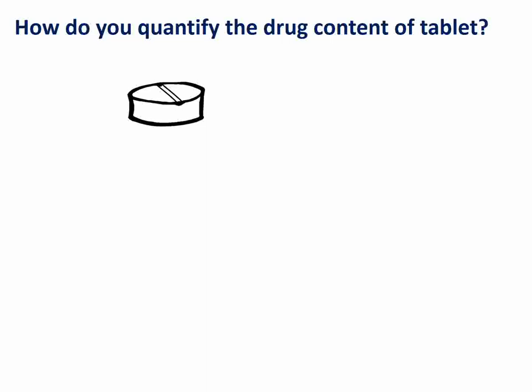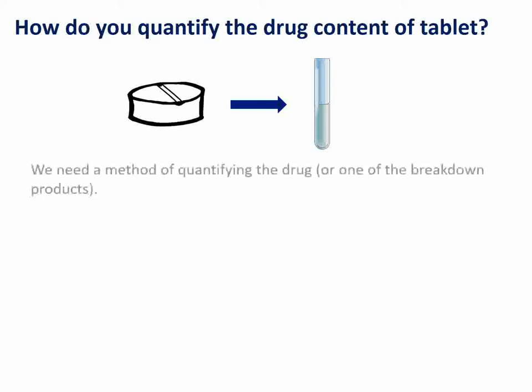Let's start off by thinking about how we might quantify the drug content of a tablet. One of the first things we need to think about is that most methods of quantification actually require a drug to be in solution. Yet here we are with a tablet which is a solid dosage form. So if investigating a tablet formulation, the first thing you probably need to do is crush up the tablet and then extract the drug with some type of solvent.